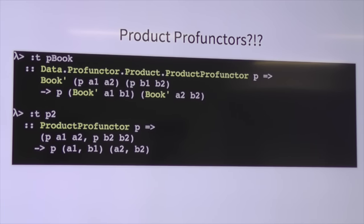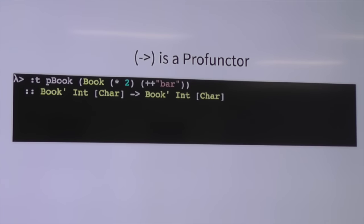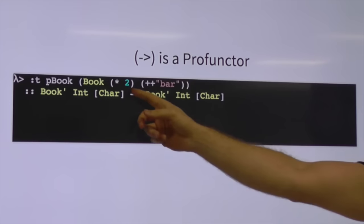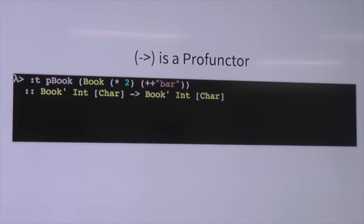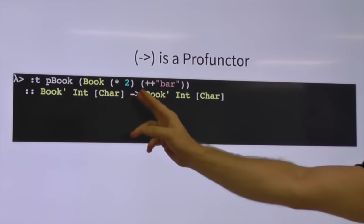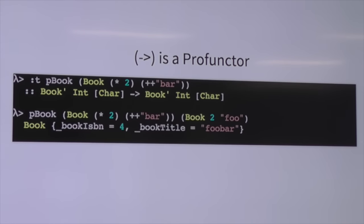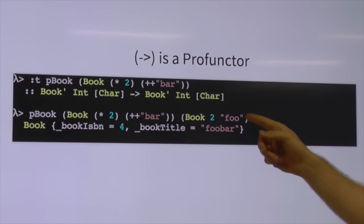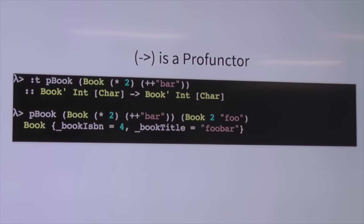Profunctors are weird. But if we think about the function arrow as a profunctor — transformations or functions from A to B and B1 to B2 — then if we take our `pBook` and fill it in with two functions, one that multiplies a number by 2 and one that puts 'bar' onto the end of a string, we get back a function from `Book Int Char` to `Book Int Char`. So really what we're using product profunctors for is to layer transformations through our nested structures.